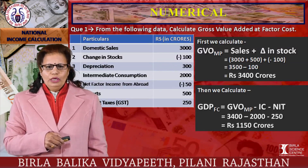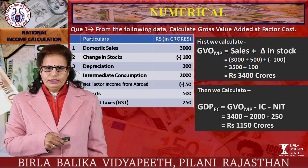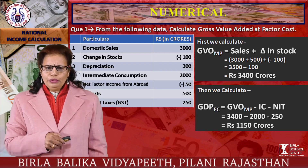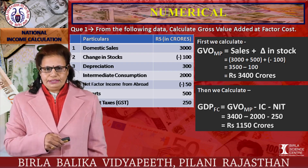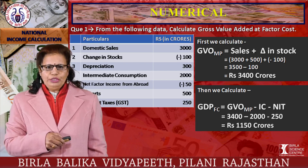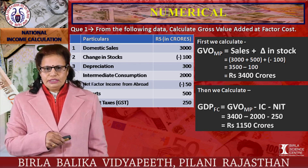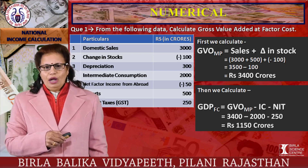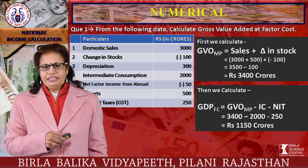Now let us solve numericals by applying the formulas. In the first numerical, domestic sales and change in stock are given. First, calculate GVO at market price: domestic sales plus change in stock equals 3400. Then calculate GDP at market price: GVO at market price minus intermediate consumption minus NIT equals 1150 crores. Note that when domestic sales are given, exports (500) are added to the calculation.